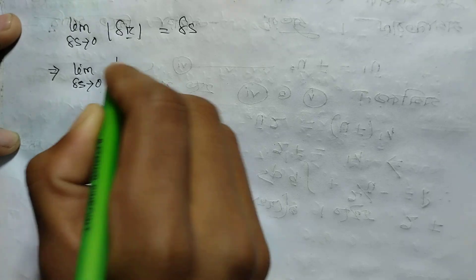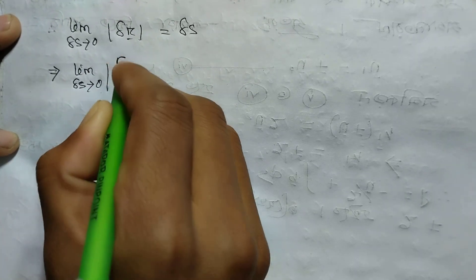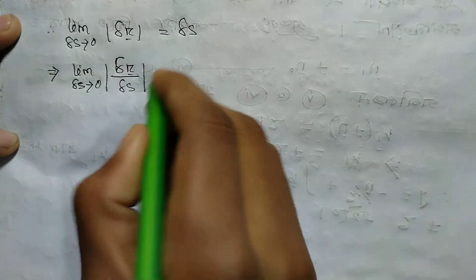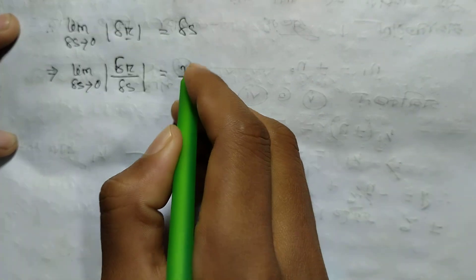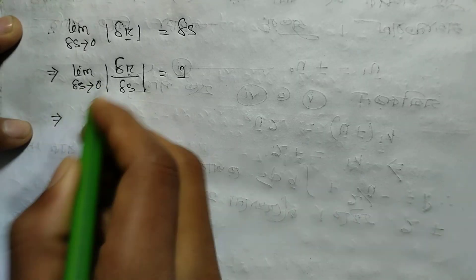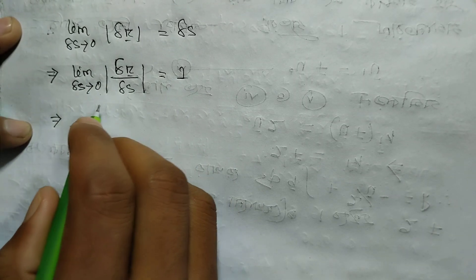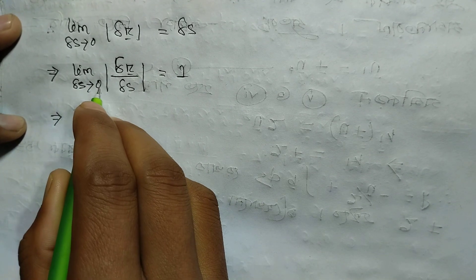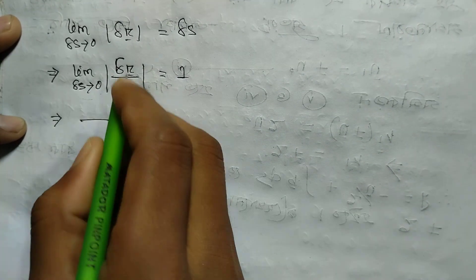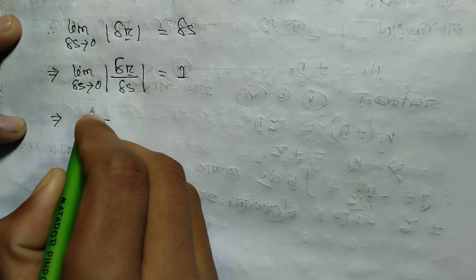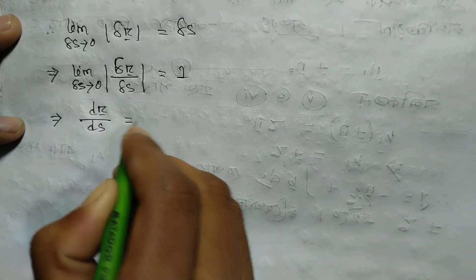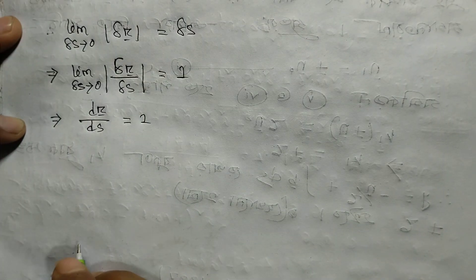The modulus of del r vector by nature — as del s is a small arc — the limiting value is because of the whole way as distance goes to zero. The limit gives us dr by ds as a unit vector, the direct derivative — dr vector by ds equals a single unit vector.